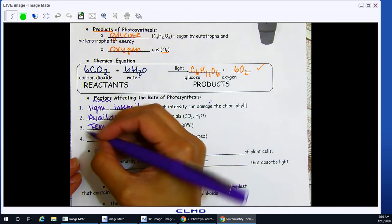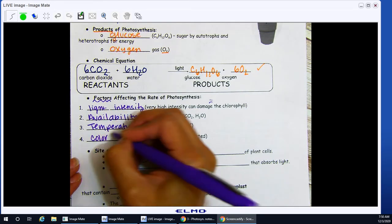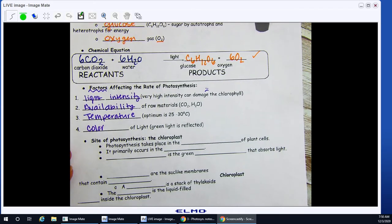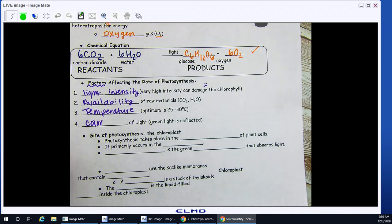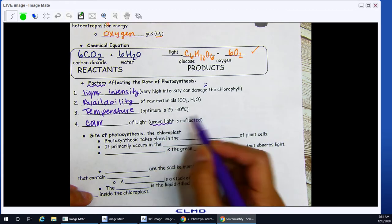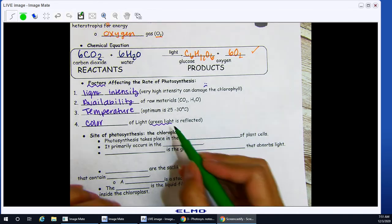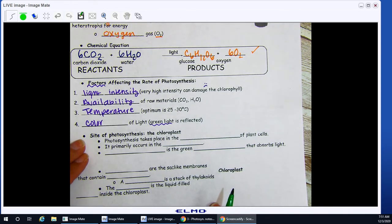Number four. The color of light. Green light is reflected. Next, we have where does photosynthesis happen? So, speaking of that green light, your chloroplasts contain chlorophyll, and those are what give it the green color because green light is being reflected.